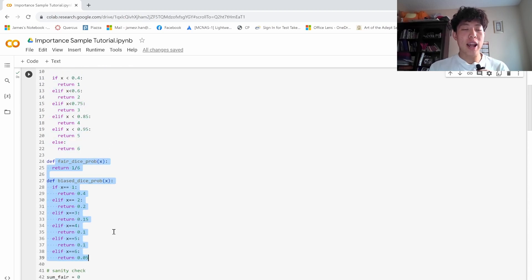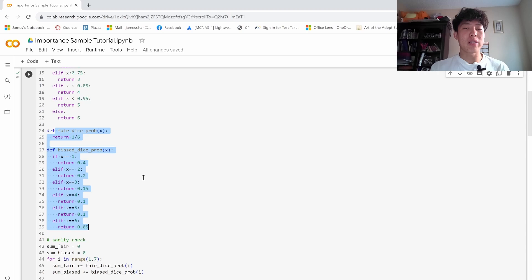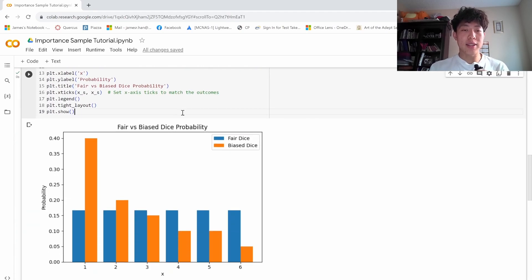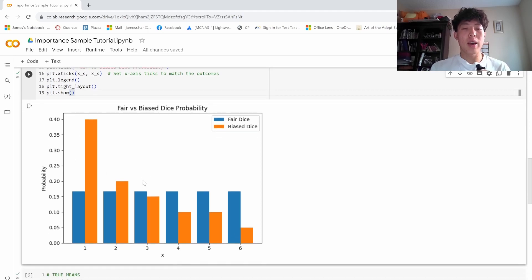We also have these two functions that help us return what the probability of each event is, and the distributions look like this. So the biased dice is much more heavily favored towards 1.